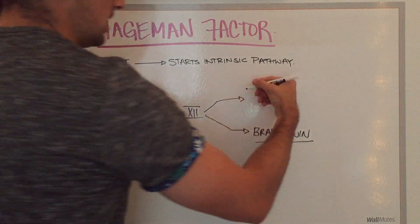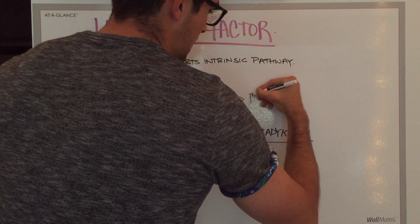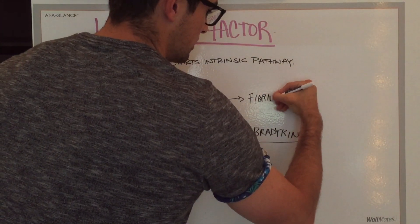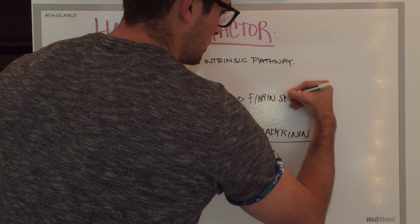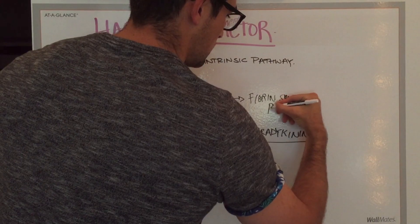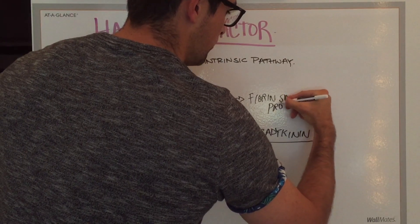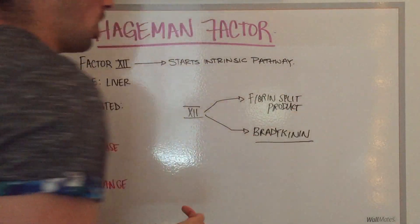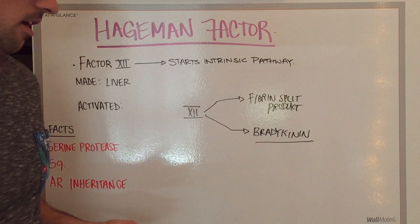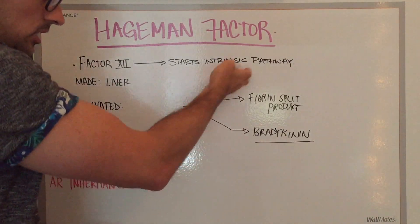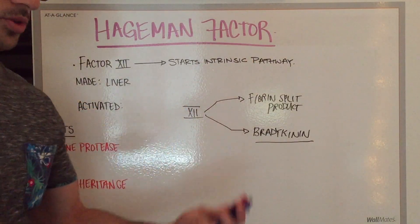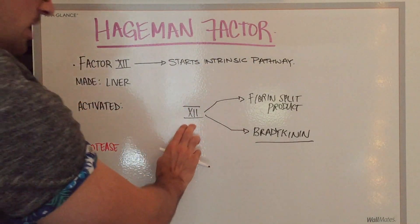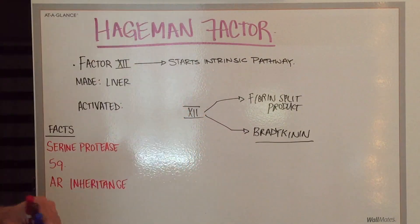The other effect is the production of fibrin split products, which are associated with the formation of clots and thrombosis. Those are the two main downstream effects of factor 12 activation.